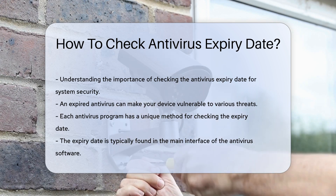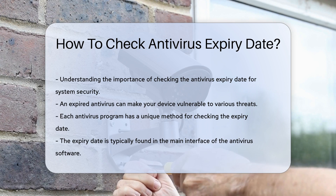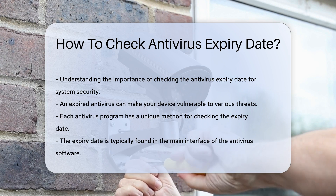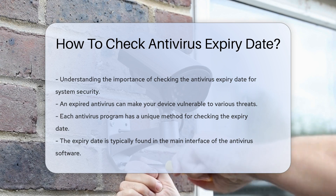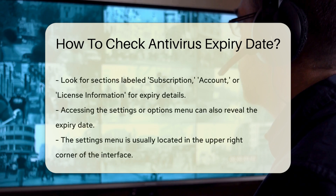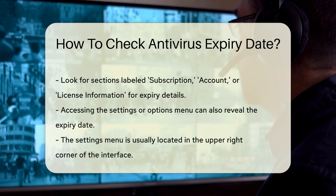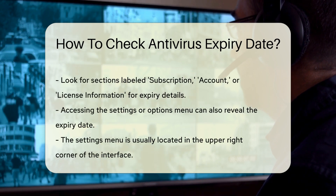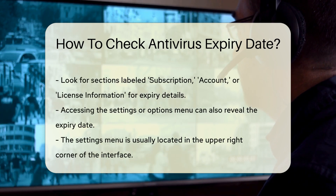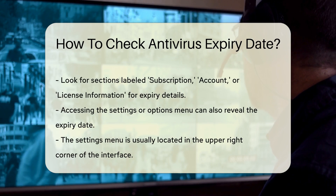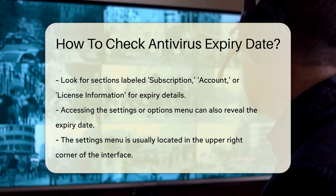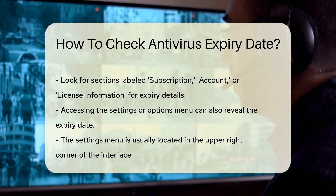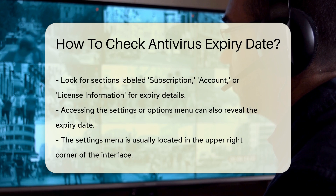Typically, you can find the expiry date in the main interface of the antivirus program. Look for sections labeled Subscription, Account, or License Information. These areas usually display the status of your subscription, including the expiration date.